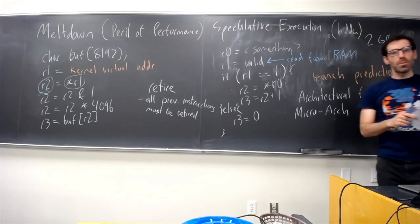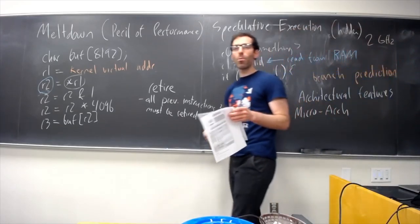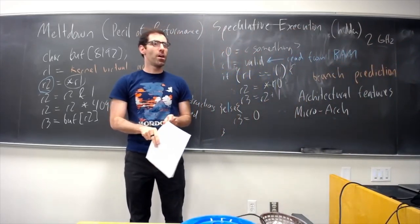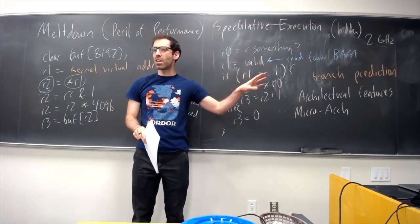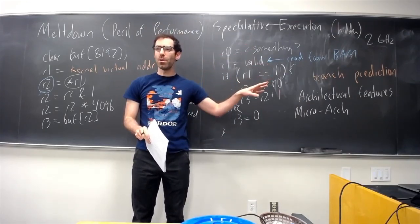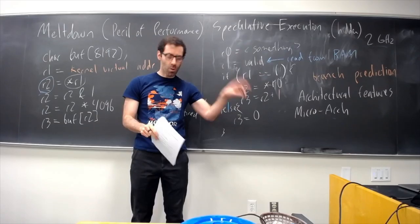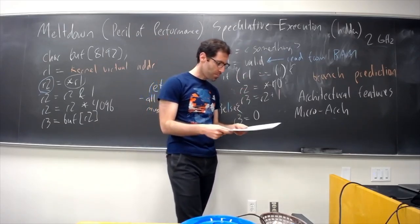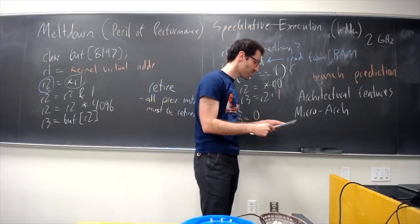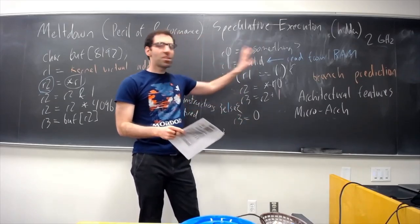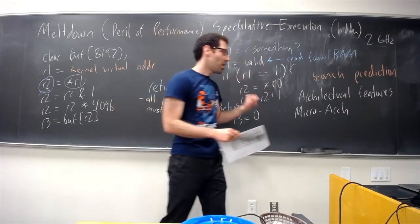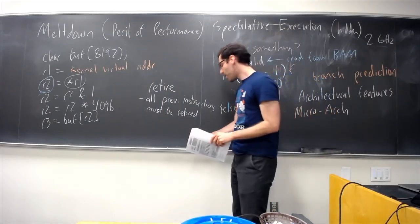So, that complicated diagram that I put up was a diagram of the micro-architecture of a CPU. Kind of, of like, what are these different pieces doing. So, that's the speculative execution part. There's one other thing that we have to care about. We talked about it earlier.